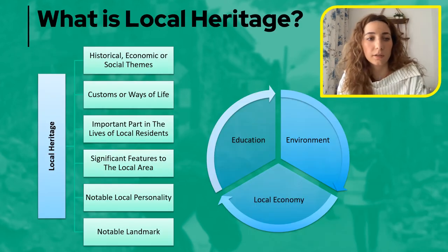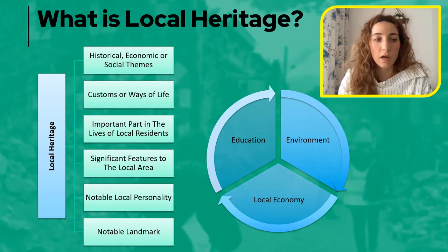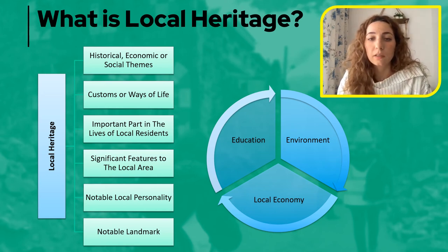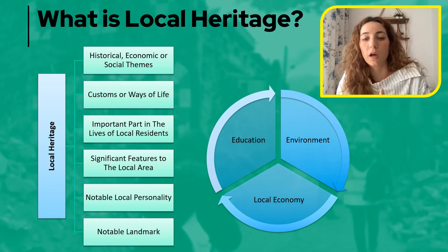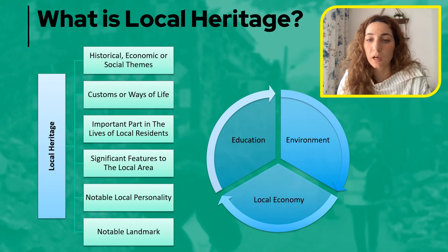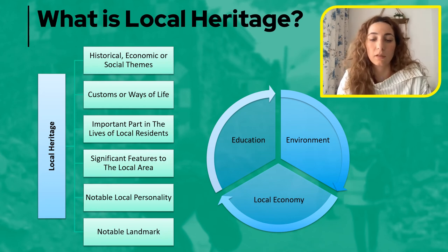So, what is local heritage? A place or object may be considered to have a local heritage value if it meets one or more of the following criteria: it displays historical, economic, or social themes that are of importance to the local area; it represents customs or ways of life characteristic of the local area; it has played an important part in the lives of local residents; it displays design characteristics or construction techniques of significance to the local area; or it may be associated with a notable local personality, event, or landmark in that local area.